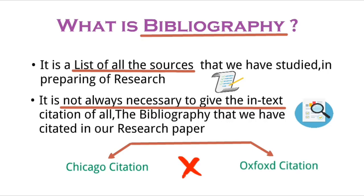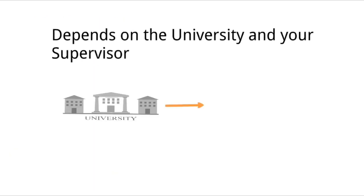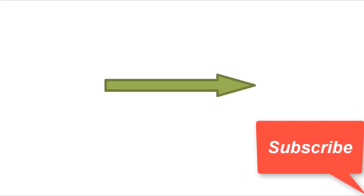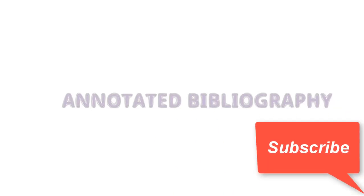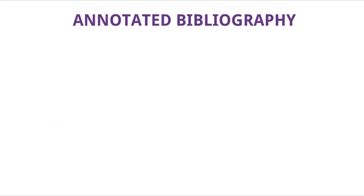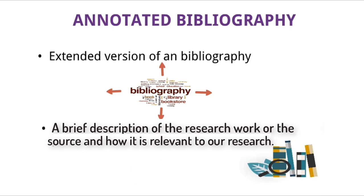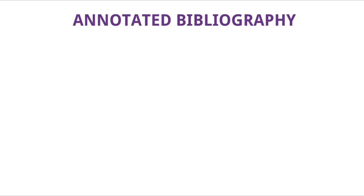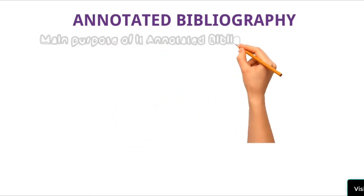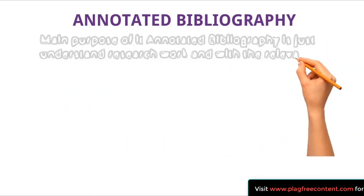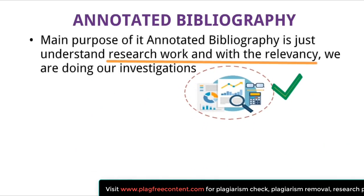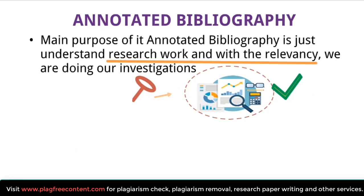Again, it is not mandatory to use these citation styles — it depends on the university and your supervisor. Now coming to our main topic: annotated bibliography. Annotated bibliography is an extended version of a bibliography. That means it includes a brief description of the research work or source and how that source is relevant to our research work. The main purpose is to understand the researcher's work along with its relevancy to the topic under investigation.